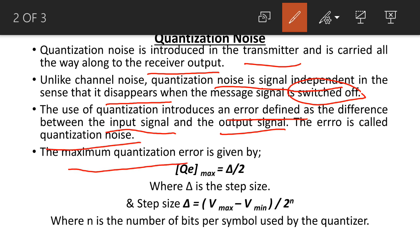Now, maximum quantization error is equal to delta by 2, where delta is step size. This is equation 1. And step size delta equals V_max minus V_min divided by 2 to the power n, where n is the number of bits per symbol used by the quantizer. This is equation 2.